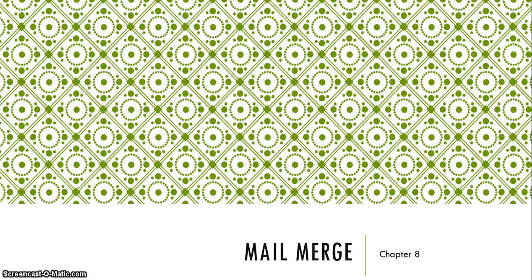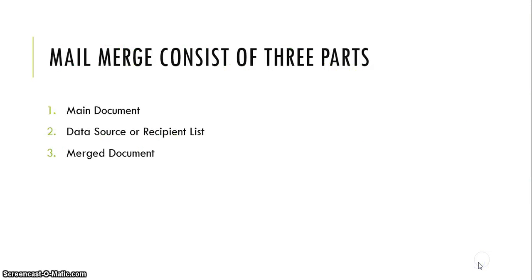Word Level 1, Chapter 8: Mail Merge. Mail Merge consists of three parts: first being the main document, second being the data source — another name for that is recipient list — and third being the merge document.